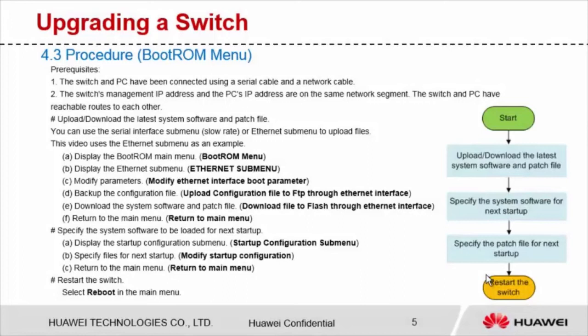Next, let's see how to upgrade a switch using the boot ROM menu. Before upgrading, you must connect the switch and PC using a serial cable and network cable, ensure that the switch's management IP address and the PC's IP address are on the same network segment, and ensure that the switch and PC have reachable routes to each other. In the boot ROM menu, use the serial interface submenu or Ethernet submenu to upload the system file. Because it is slow to transfer files through the serial interface, I will use the Ethernet submenu as an example to back up the configuration file and upload the system file to the switch.